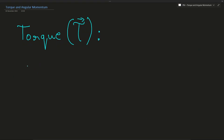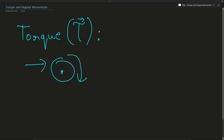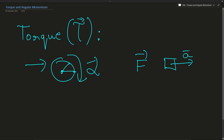Torque is a type of force that causes an angular displacement — that is, it causes a change in angular acceleration. This is similar to how linear force causes a change in linear acceleration. So torque causes an angular displacement and linear force causes a linear displacement.